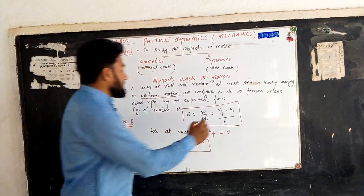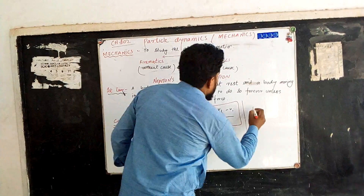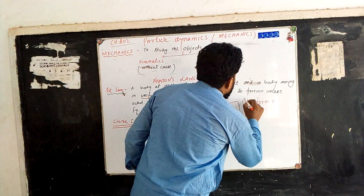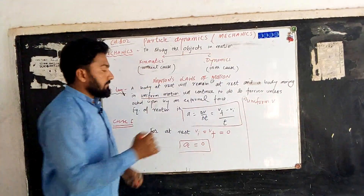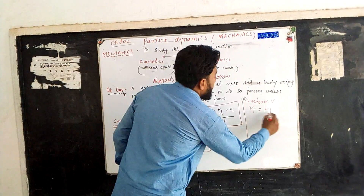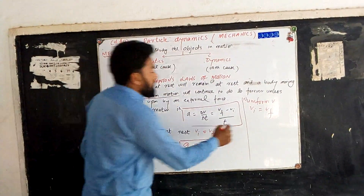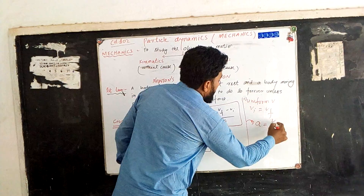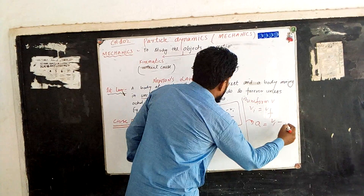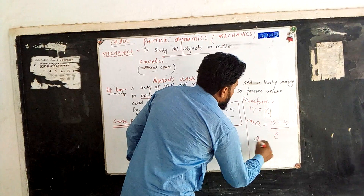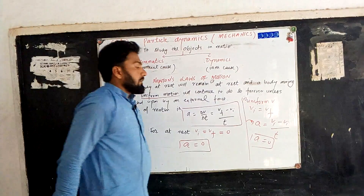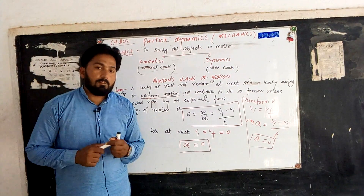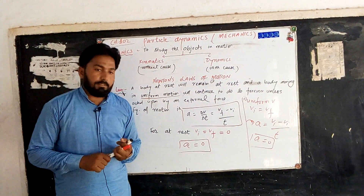Case 2: when the object is moving with uniform velocity. If the velocity is uniform, it means vi equals vf. In that case, the acceleration equation becomes: acceleration equals vf minus vi over t. Since both velocities are equal, vf minus vi equals zero, so acceleration is zero again. Thus, all objects whose acceleration is zero obey Newton's first law of motion.